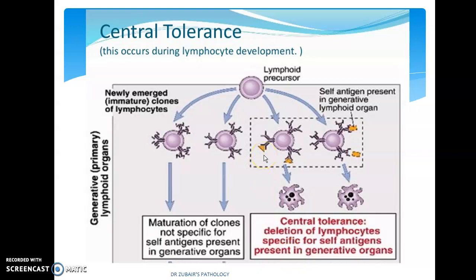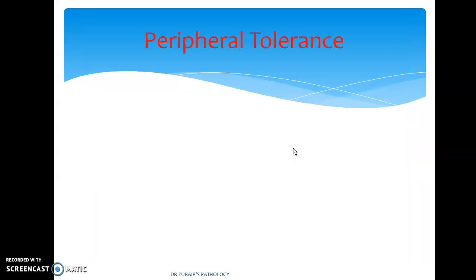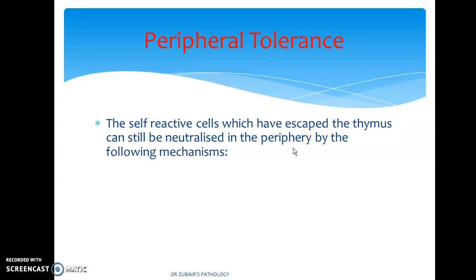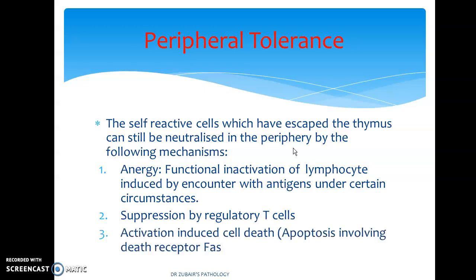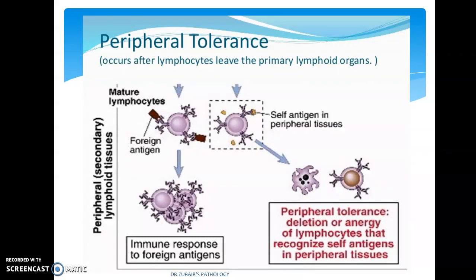The self-reactive cells which have escaped the thymus can still be neutralized in the periphery by peripheral tolerance through the following mechanisms: anergy — functional inactivation of lymphocytes induced by encounter with antigen; suppression by regulatory T cells; and activation-induced cell death involving apoptosis via death receptors. In peripheral tolerance, the key mechanism is anergy or deletion of lymphocytes that recognize self-antigen in peripheral tissue.